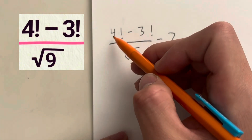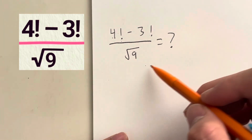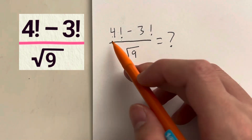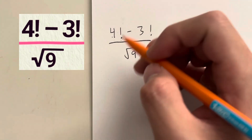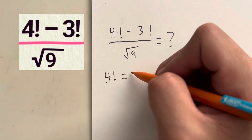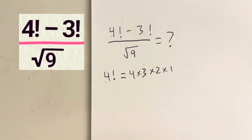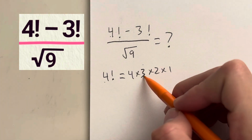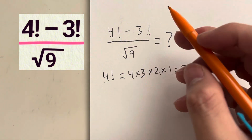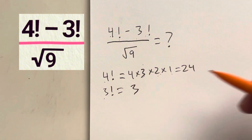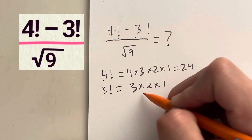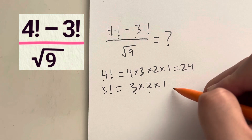For the last question, we have 4 factorial minus 3 factorial over the square root of 9. For factorials, you take the number and multiply by all the integers smaller than it. So 4 factorial is 4 times 3 times 2 times 1. 4 times 3 is 12, times 2 is 24, times 1 is 24. For 3 factorial: 3 times 2 times 1. 3 times 2 is 6, times 1 is 6.